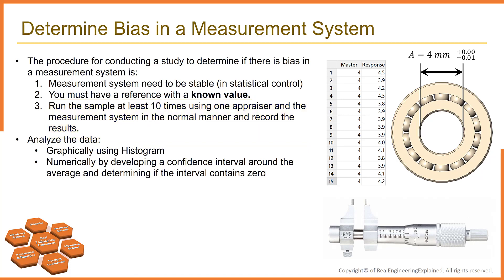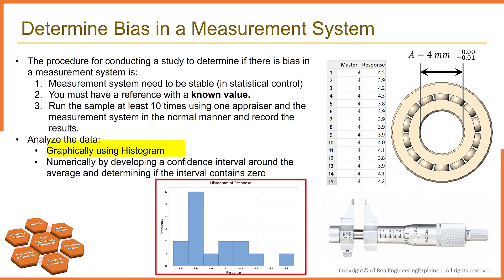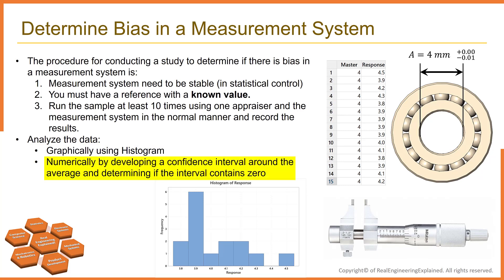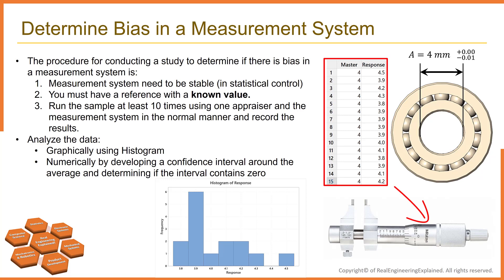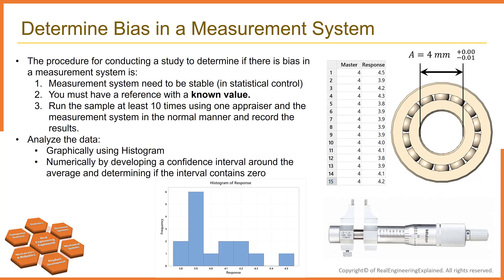The results can be analyzed in two ways: first, graphically using a histogram; or numerically by developing a confidence interval around the average and determining if the interval contains zero. Look at this data set in the Excel sheet. An engineer wants to assess the bias of a measurement gauge used to measure the inner diameter of bearings. The engineer chose one part with an inner diameter of 4 millimeters, and one operator randomly measured the part 15 times.